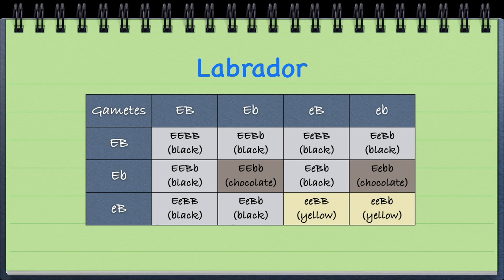If we take recessive for the first gene and dominant for the second gene, we end up with two black and two yellows. If the offspring is homozygous recessive for the first gene, they end up being yellow.